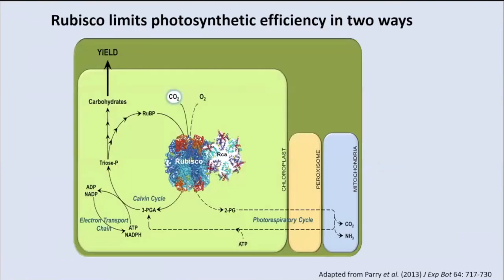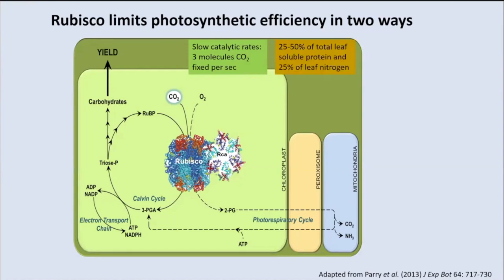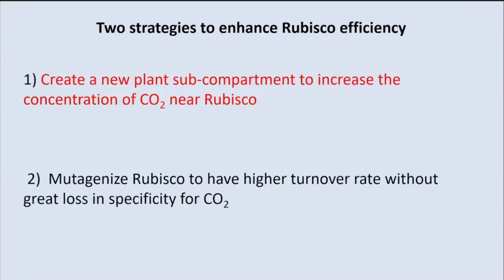Rubisco limits photosynthetic efficiency in two ways: not only by photorespiration, but also it has a very slow catalytic rate — only three molecules of CO2 fixed per second in a typical flowering plant. As a result of this slow turnover rate, 25 to 50 percent of total leaf soluble protein is actually Rubisco, using up 25 percent of the leaf nitrogen. So there is a big issue with Rubisco, and it's a target for improvement. We're taking two strategies to enhance Rubisco efficiency, and I'm going to give my talk in two parts.